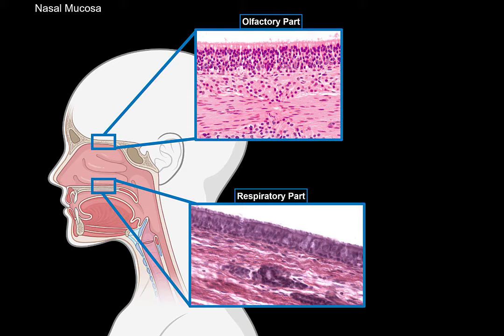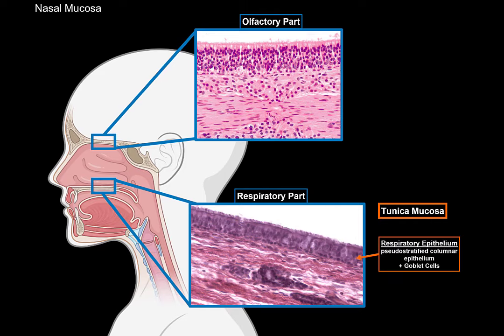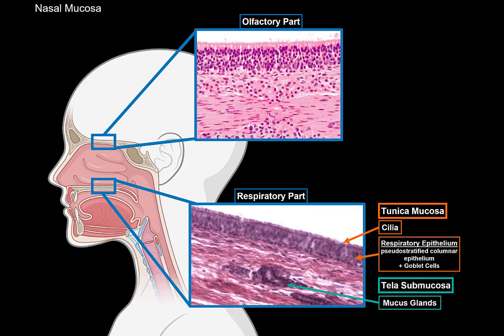I'm not going to go in too much detail into the histology, but you need to understand some basic principles in order to get the full anatomy of the nasal cavity. Both parts have a tunica mucosa, but the respiratory part has a so-called respiratory epithelium, which consists of pseudo-stratified columnar epithelium with numerous cilia on them, to catch any type of irritants in the air and trap them so that you can sneeze them out. In between the epithelium, you'll find goblet cells that produce lubricating mucus on the surface. In the tela submucosa, you'll find numerous mucus glands, which are mixed types of mucus glands that produce mucus.